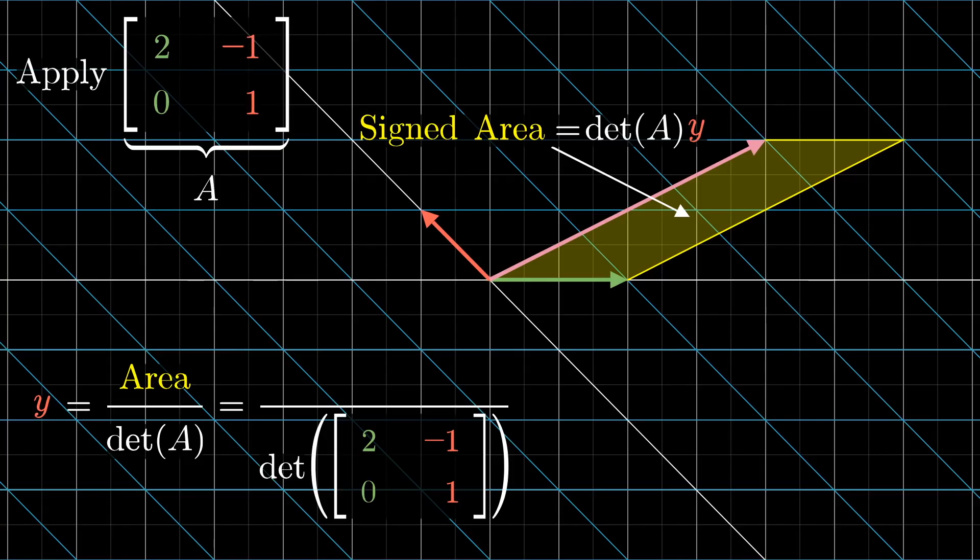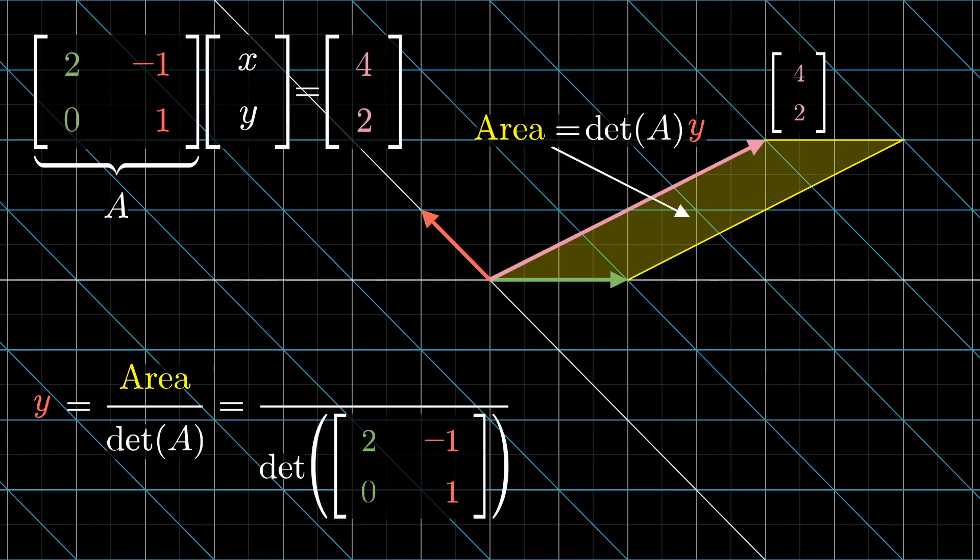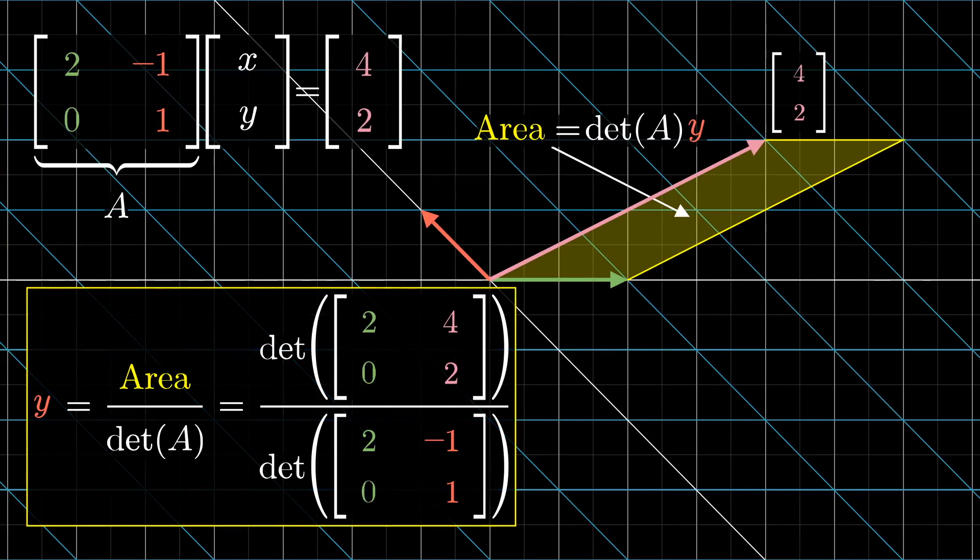And how do you get that area? Well, we know the coordinates for where the mystery input vector lands. That's the whole point of a linear system of equations. So, what you might do is create a new matrix whose first column is the same as that of our matrix, but whose second column is the output vector, and then you take its determinant. So, look at that. Just using data from the output of the transformation, namely the columns of the matrix and the coordinates of our output vector, we can recover the y-coordinate of the mystery input vector, which is halfway to solving the system.